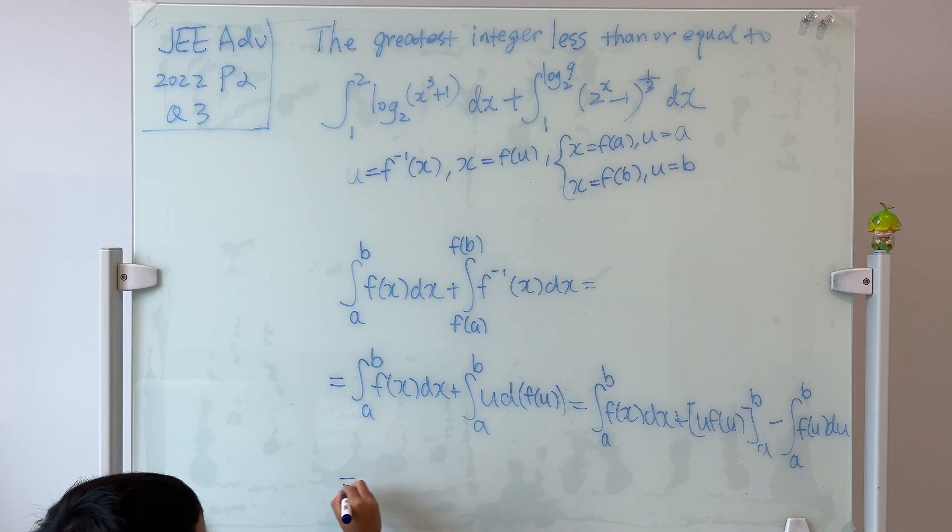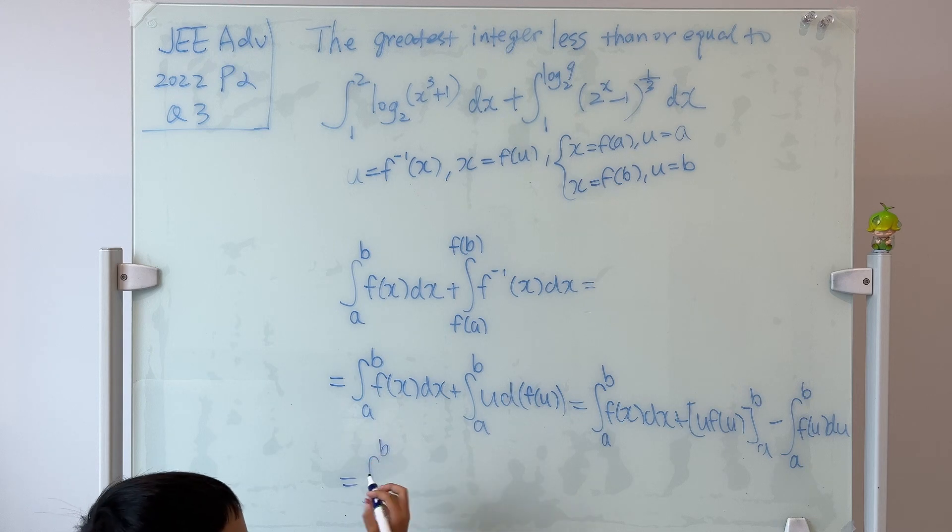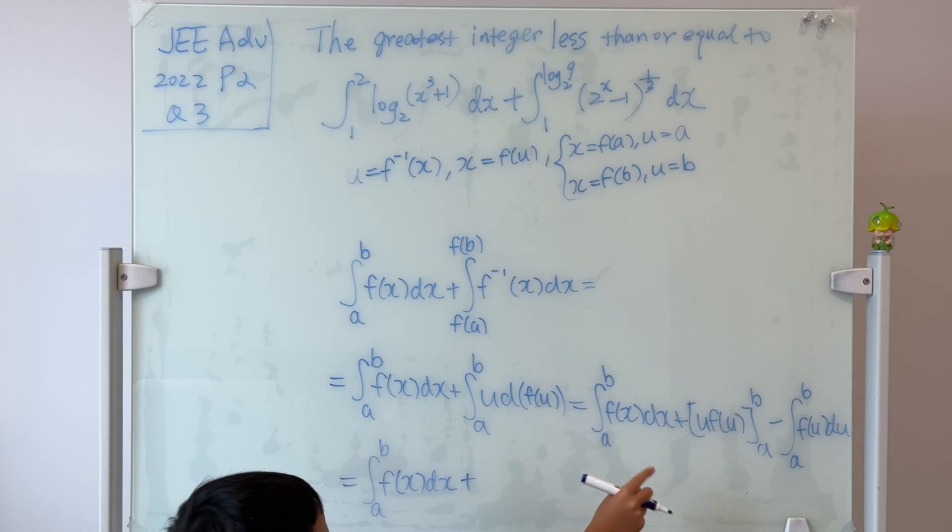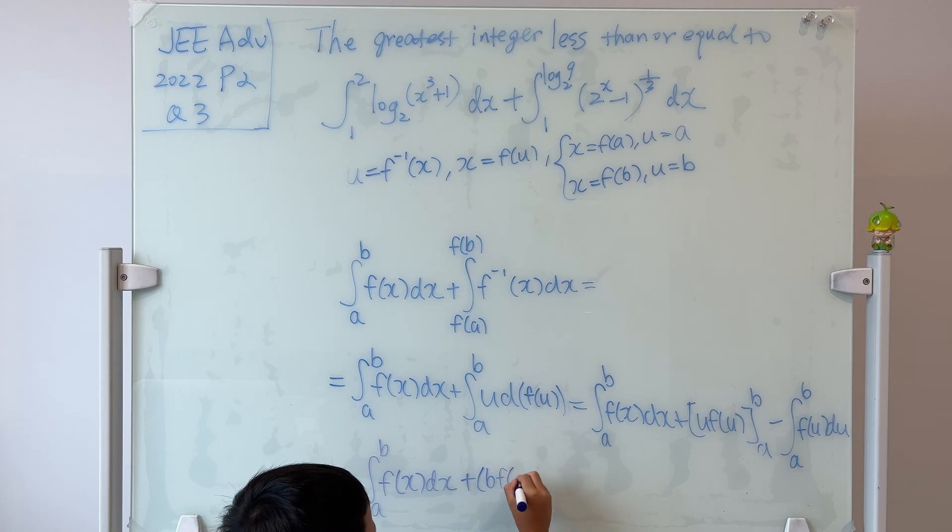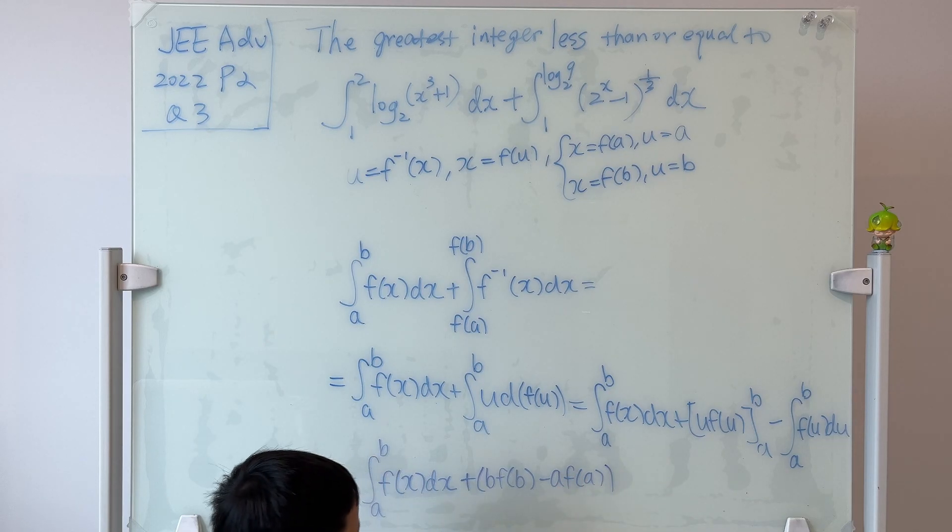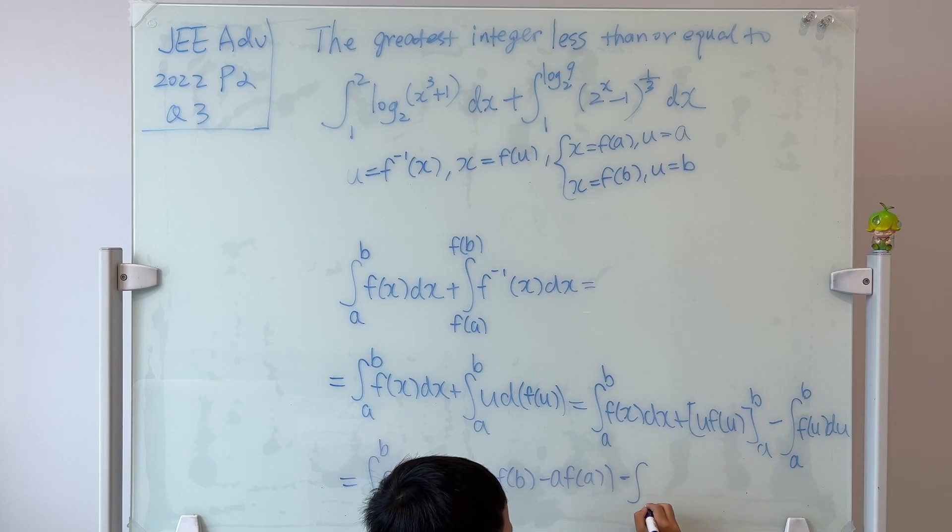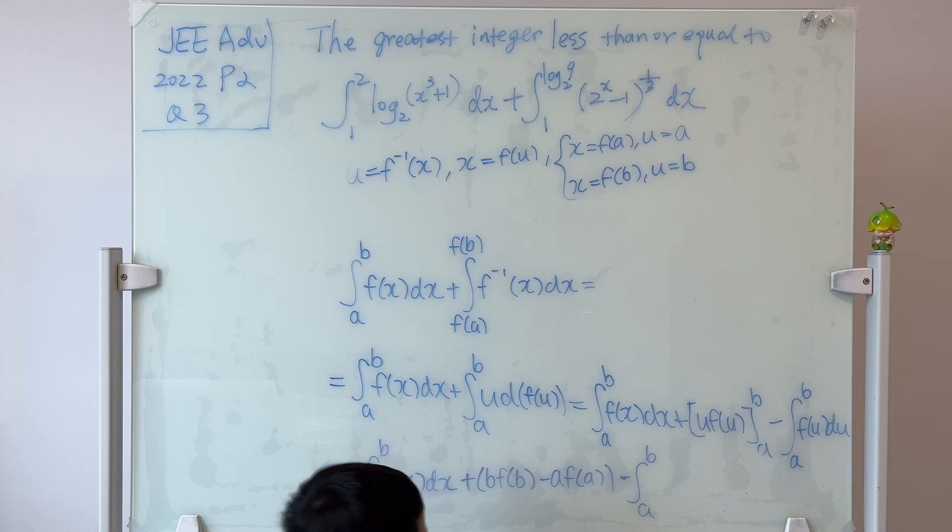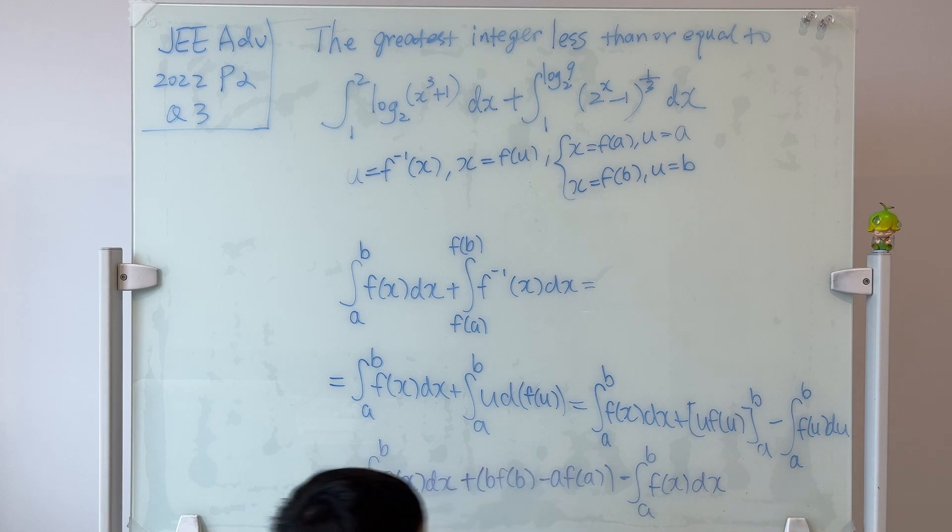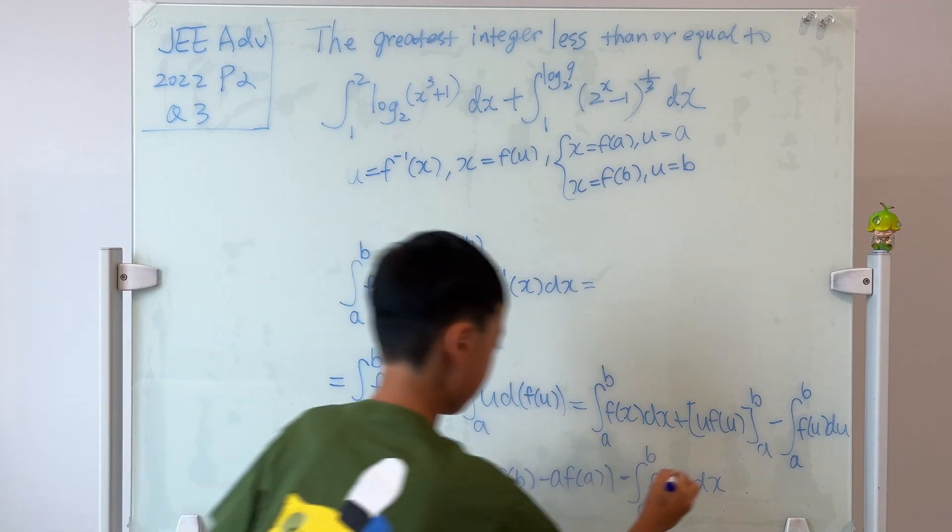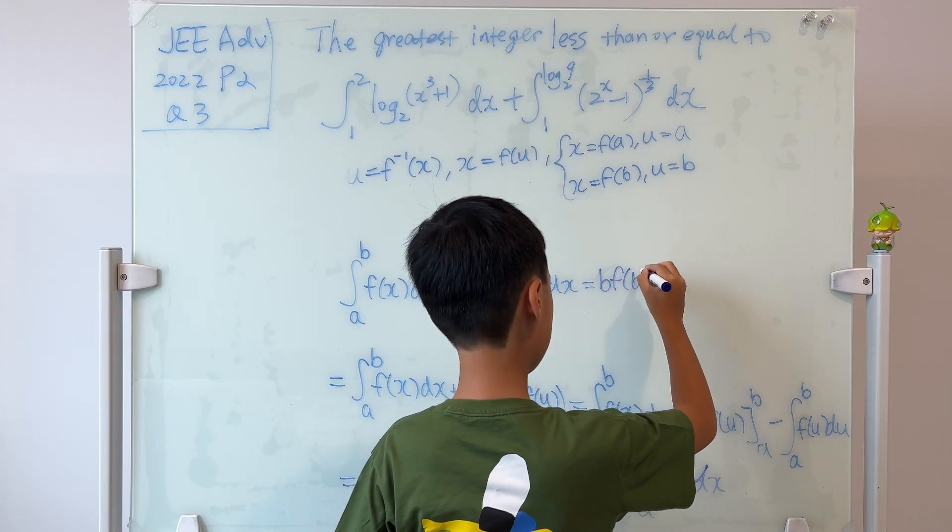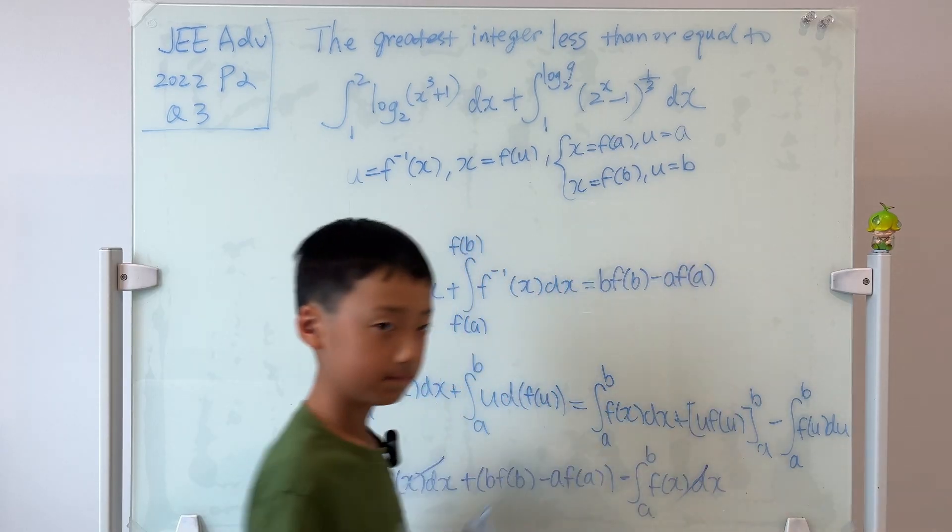Then we know that this is equal to the integral from a to b, f(x) dx, plus you plug b and plug a, then you get b·f(b) minus a·f(a). And then you subtract it with the integral from a to b, we can change u to x since these are just dummy variables. And look! This is my favourite part. Cancel, cancel. So we know that this is actually equal to b·f(b) minus a·f(a). First proof done.